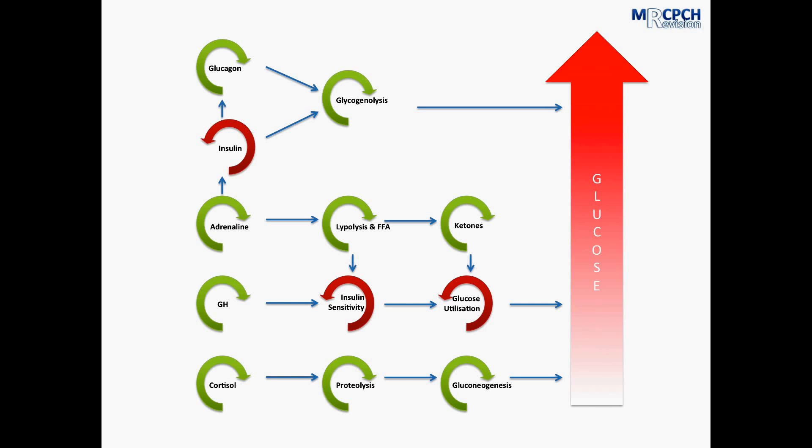If no insulin is given, this process will continue on leading to ongoing production of ketone bodies, which eventually reaches a level that can no longer be excreted by the kidneys. And when this happens, we begin to have ketoacidosis. Ketoacidosis will then lead on to coma and eventual death.